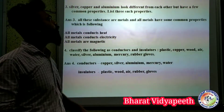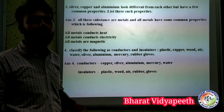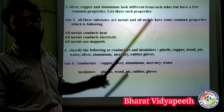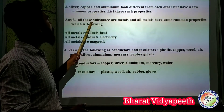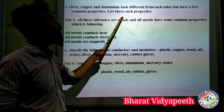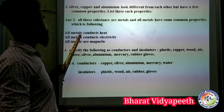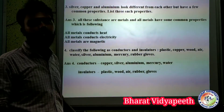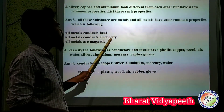Even though they look different, they share the same properties because they are all metals. Silver, copper, and aluminium all have the same metallic properties. All metals share the same key properties: they are conductors of heat, electricity, and are magnetic in nature.